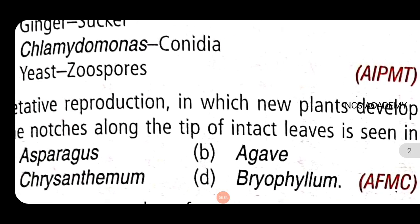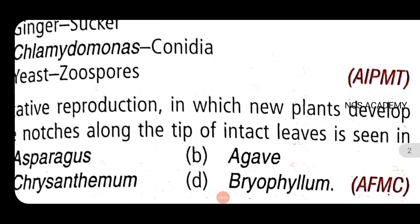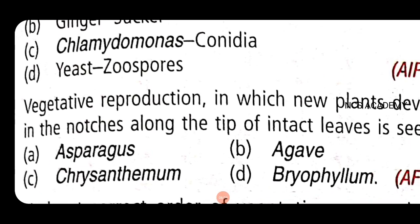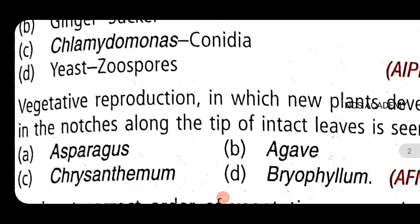Next important question: Vegetative reproduction in which new plants develop in the notches along the tip of intact leaves. We see in Bryophyllum. What is the right option? Vegetative reproduction occurs in the notches along the tip of intact leaves. Notches - that is on leaf tips.